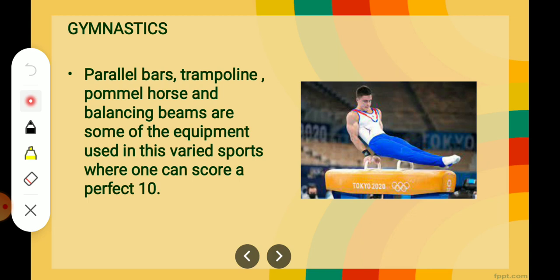The next one is gymnastics. Parallel bars, trampoline, pommel horse, and balancing beams are some of the equipment used in this varied sport, where one can score a perfect 10. There are different things people use in it — trampoline, pommel horse, and balancing beam where you have to balance your body. People with a very flexible body and a lot of practice can excel in this sport — gymnastics.